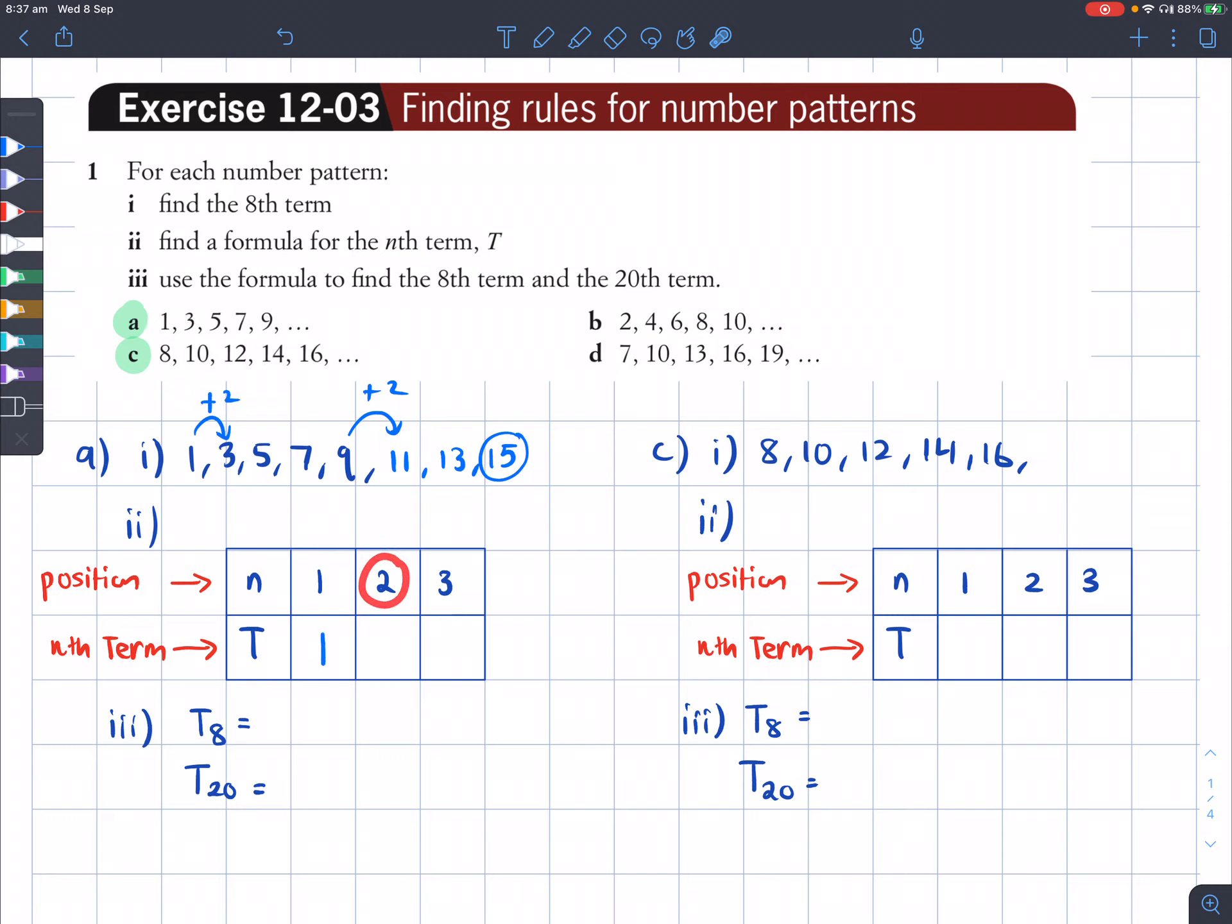The second position, I've got the number 3, which is this one here. Then for position 3, I've got number 5.